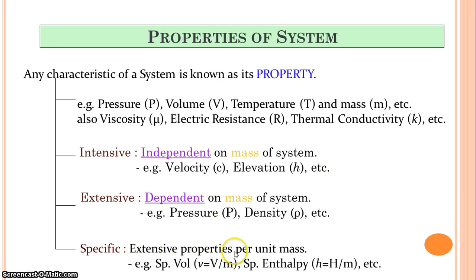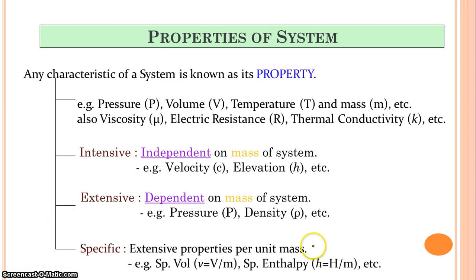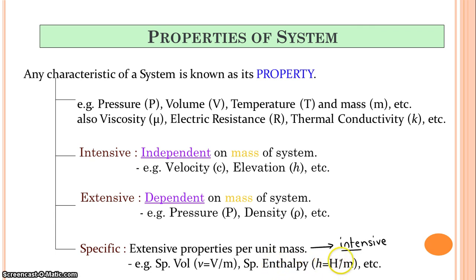One more important concept: specific properties. Extensive properties divided by unit mass are called specific properties, and these are considered intensive properties. For example, specific volume is volume divided by mass — since mass is in the denominator, it becomes independent of the mass of the system. Specific enthalpy is capital H divided by M. So remember: specific extensive properties are intensive.